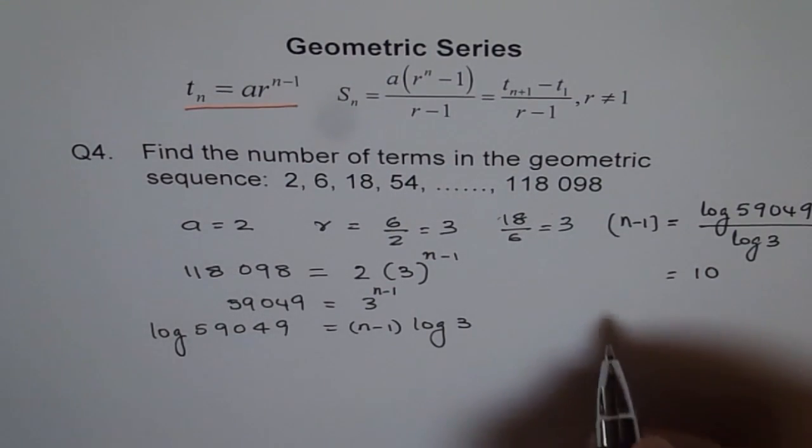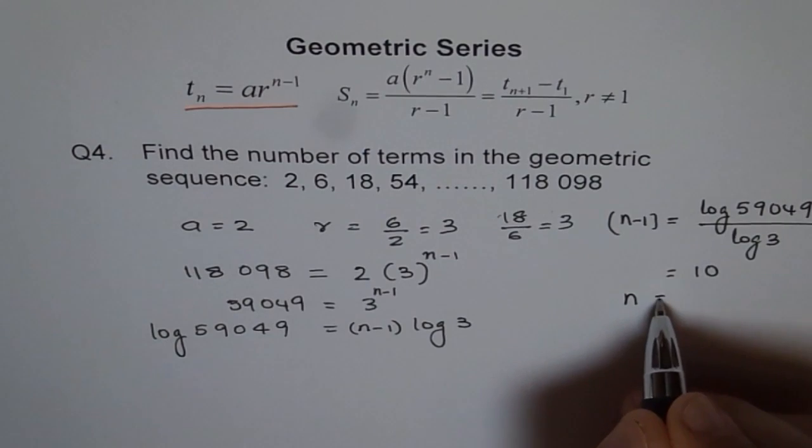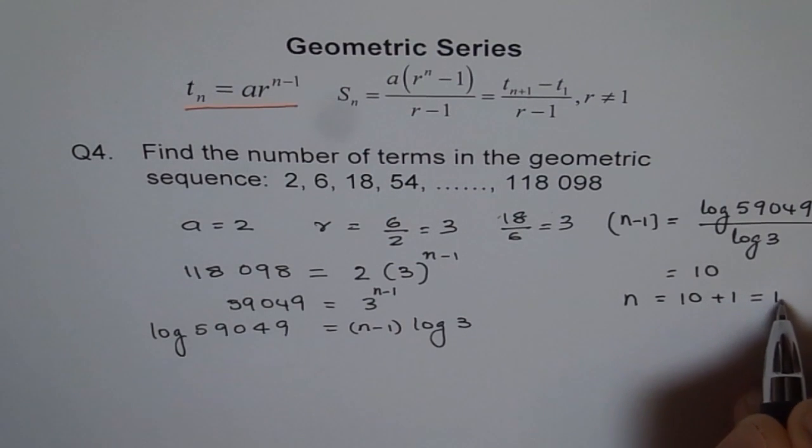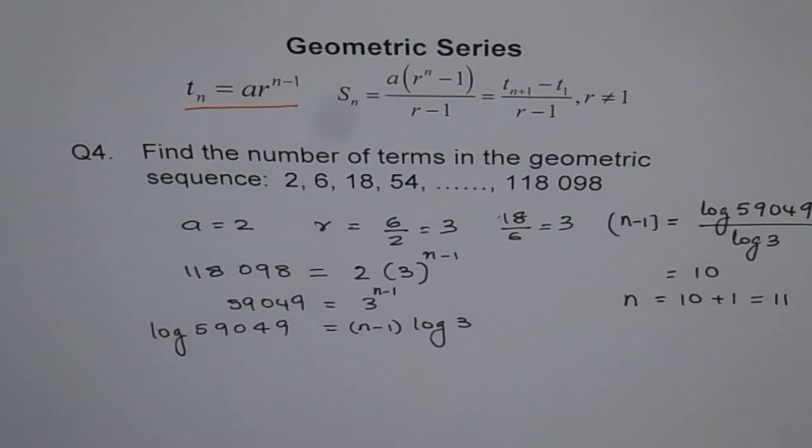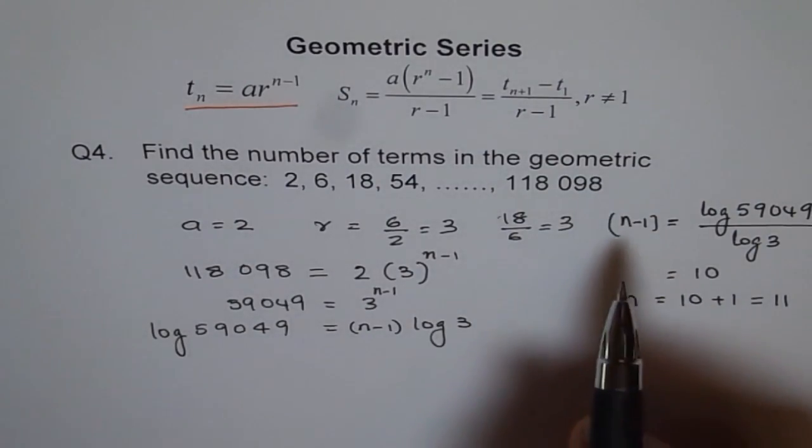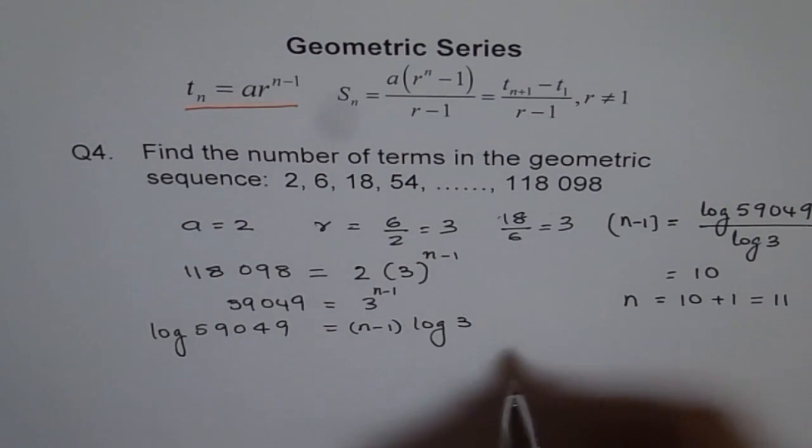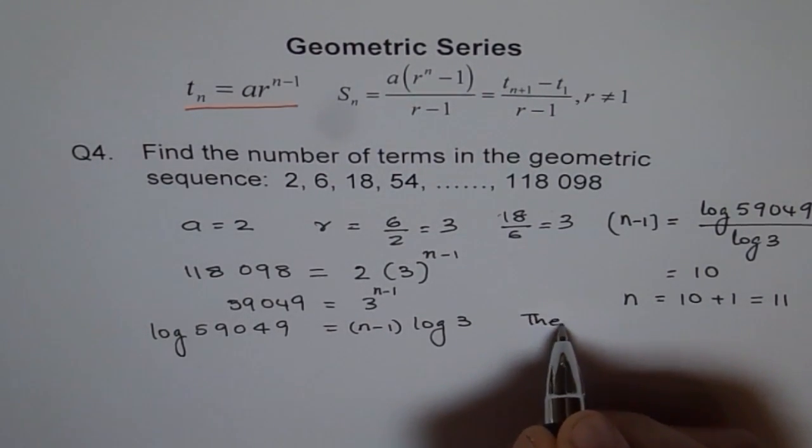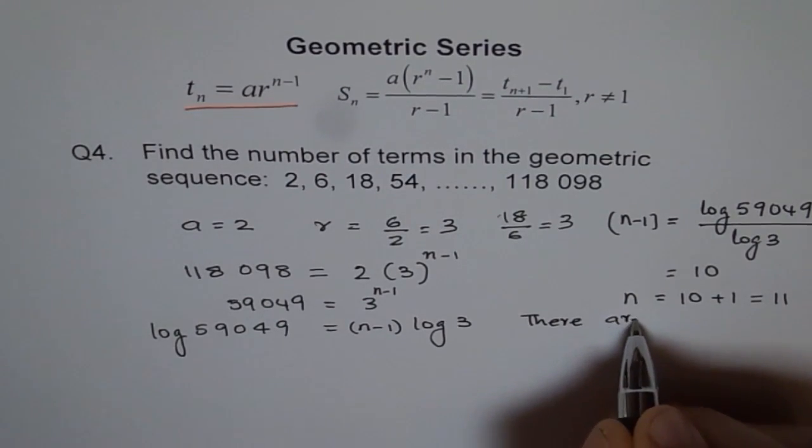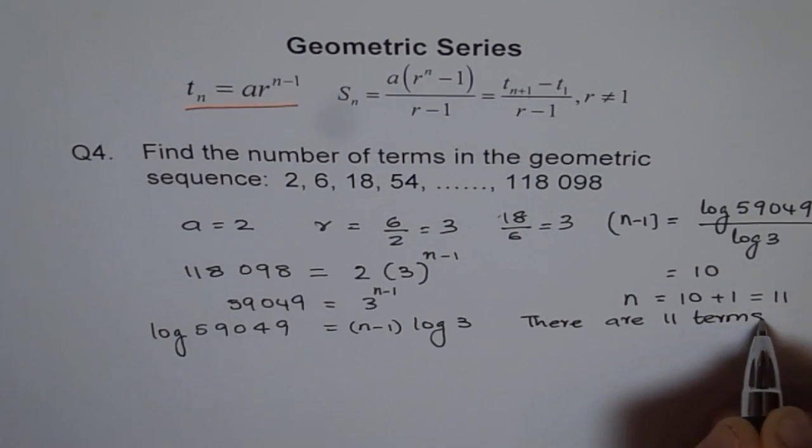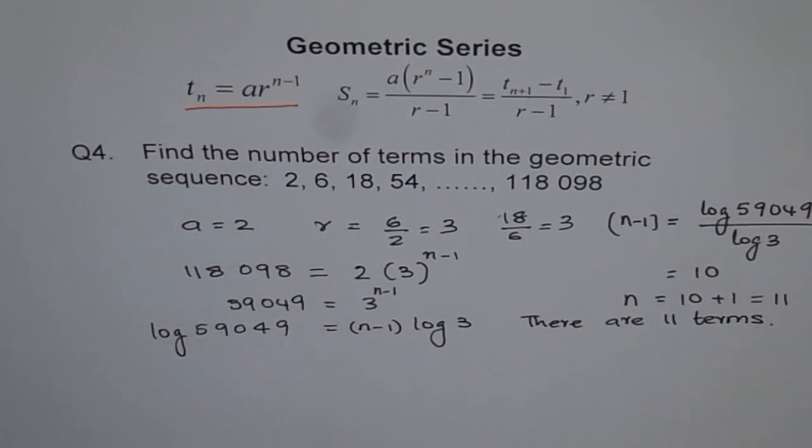So n minus 1 is 10. Therefore, what is n equals to? n equals to 10 plus 1, which is 11. So the term number, so the number of terms in this geometric sequence is n equals to 11. So there are 11 terms in our geometric sequence.